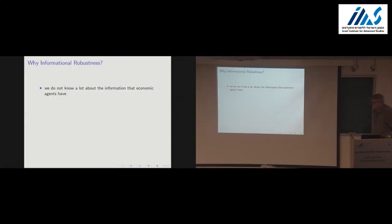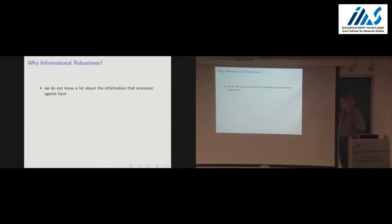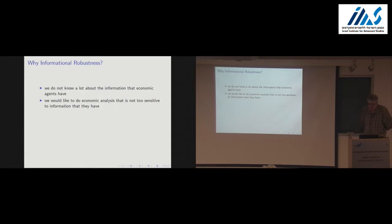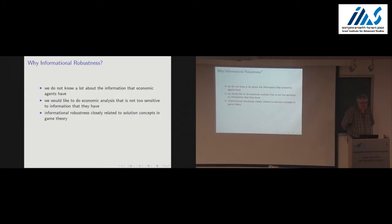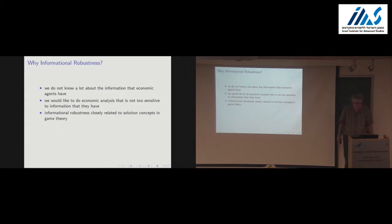Informational robustness is just the idea that we don't know a lot about the information that economic agents have, so we'd like to do economic analysis that is not too sensitive to that. It turns out that thinking about informational robustness — many different ways of trying to think about it — are going to end up being equivalent to thinking about something about solution concepts in game theory. To say that something is informationally robust is to say that it survives under a more permissive solution concept.